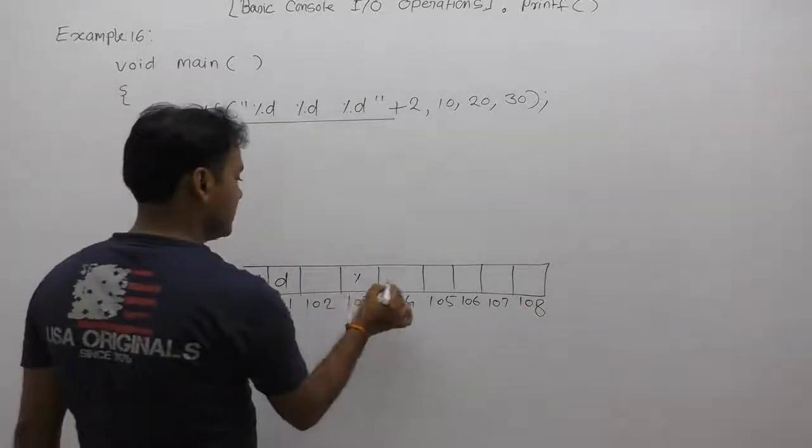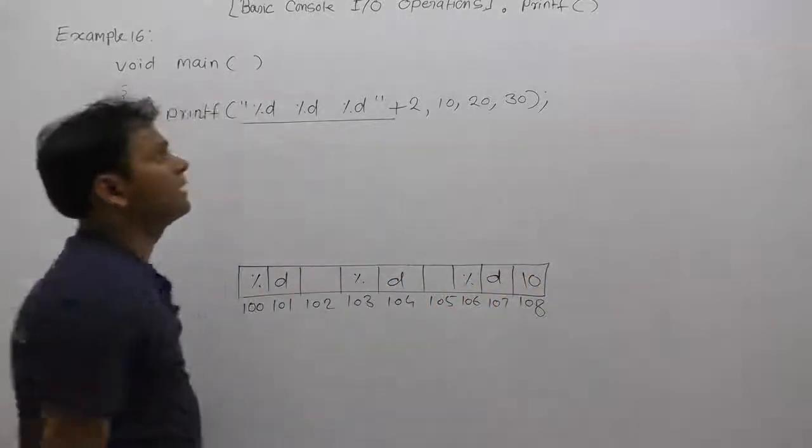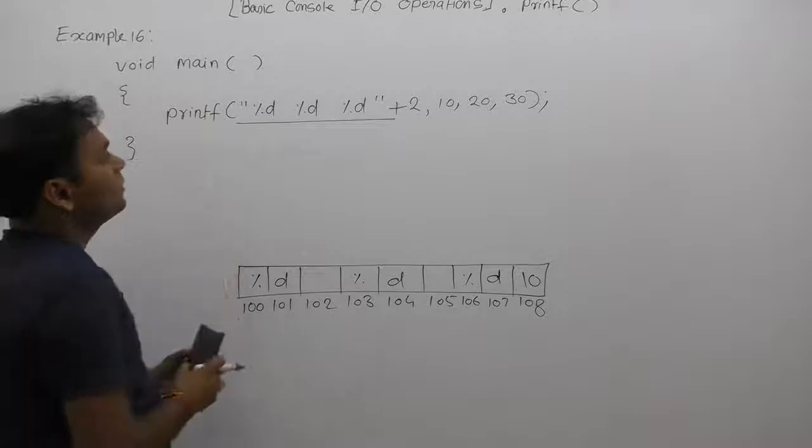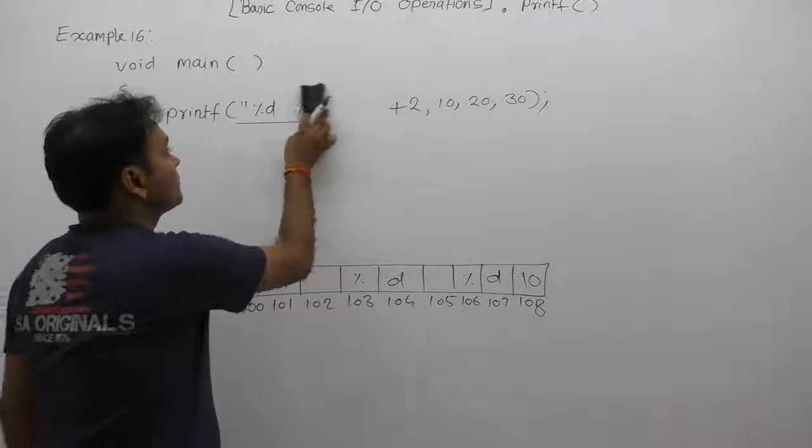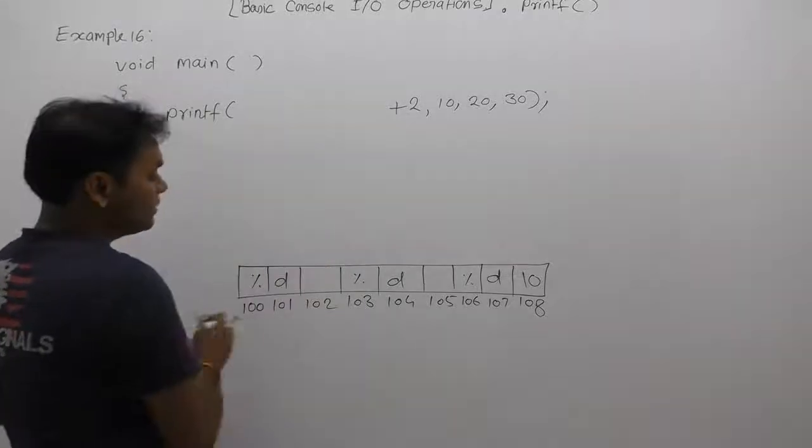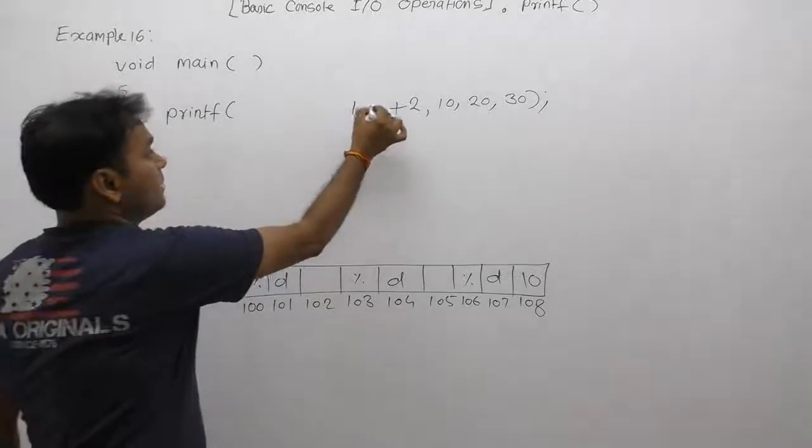Again, first before processing this format string, we are performing addition. In that case, we are replacing the base address of that string, which is 100. 100 plus 2 becomes 102.